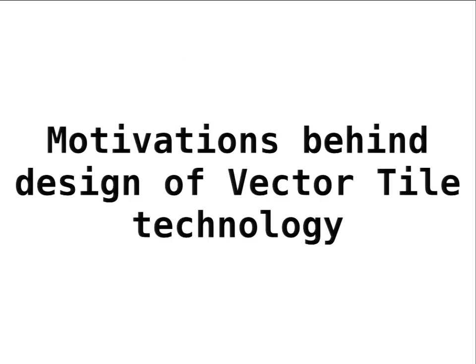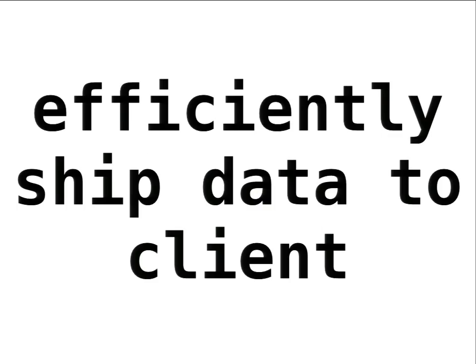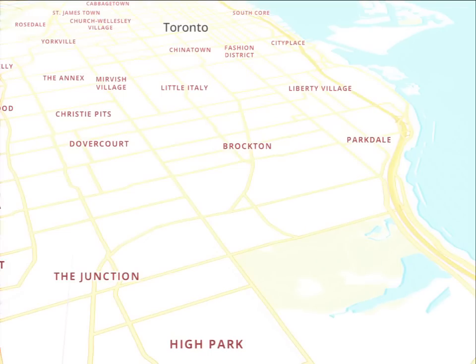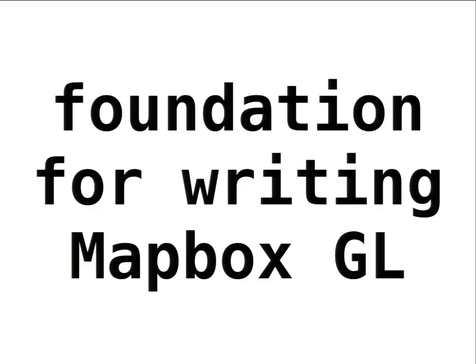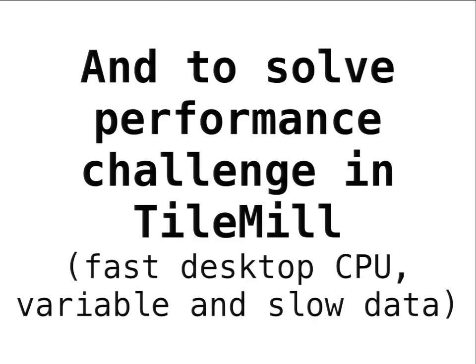For those of you that haven't heard of vector tiles yet, the motivations might be a little out of context, but I wanted to put them right up front, because I wanted to be honest about how we think about vector tiles. So what are the motivations behind the technology? Well, the main goal was to find an efficient way to ship data to the client — the web browser — because we had the idea of Mapbox GL in mind when creating the spec, which Vlad and Nikki, my colleagues, talked about previously.